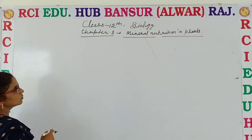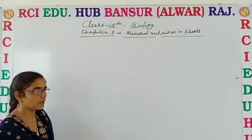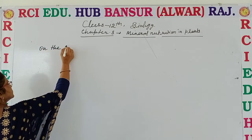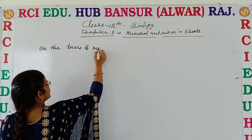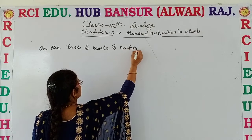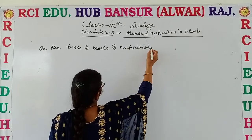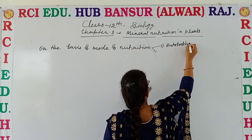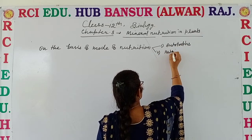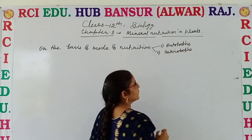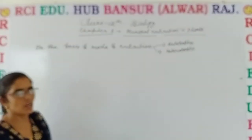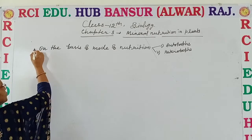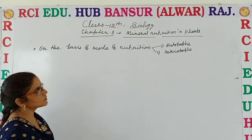Here we discuss how we can know which mineral nutrients are essential for plants. First, on the basis of mode of nutrition, organisms are divided into two parts: autotrophs and heterotrophs. It is a very simple thing — whether human beings or plants, everybody needs nutrition for survival. So on the basis of mode of nutrition, we divide organisms into autotrophs and heterotrophs.